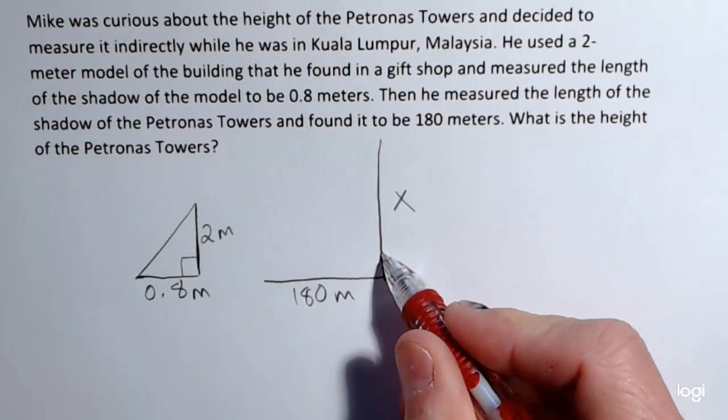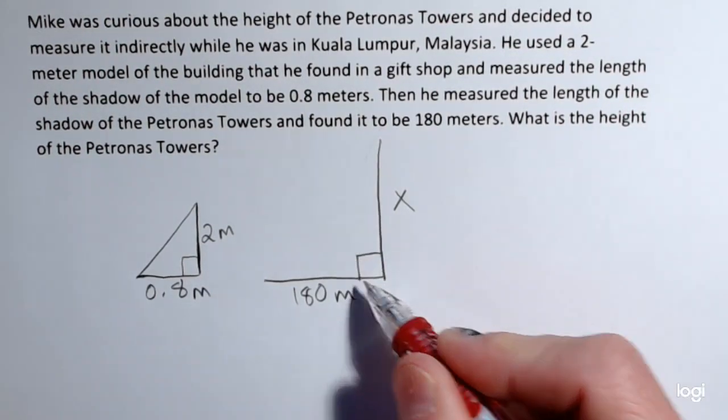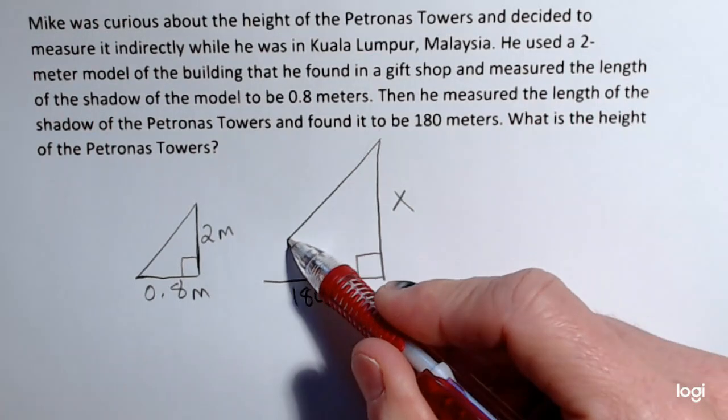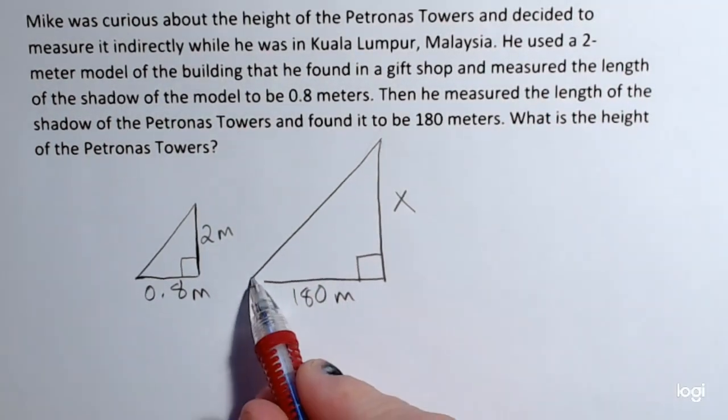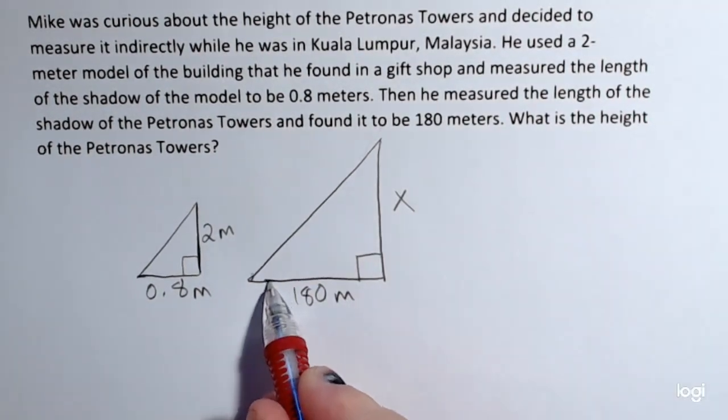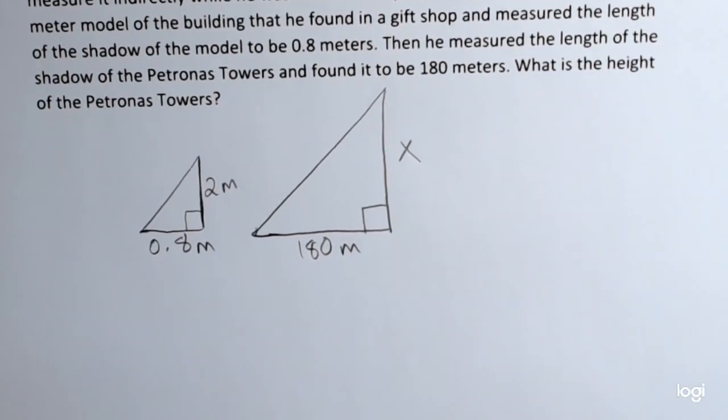And again the tower would form a right angle with the shadow. So enclosing that you'll see that we have similar triangles and I can use direct proportion in this case.